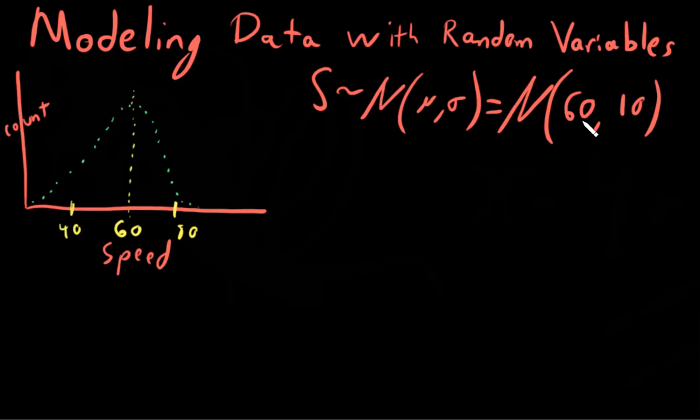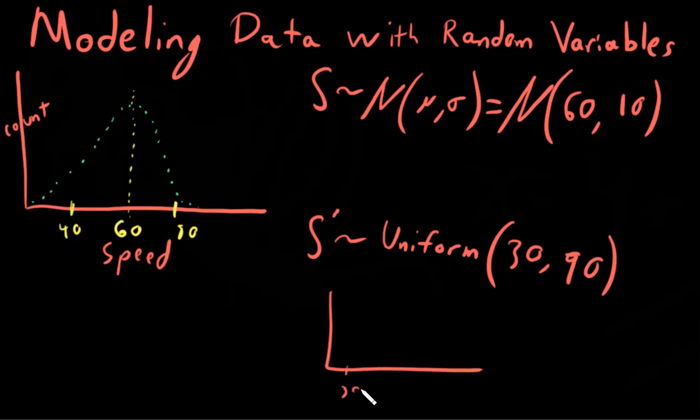Let's look at an alternative. We could, for example, choose to model this via a different random variable. Let's say we're going to model it with S prime as a different random variable. And instead of using the normal distribution, we're going to use the uniform distribution between the ranges of 30 and 90. And so if we were to plot what this distribution looks like, and if this is 30 and this is 90, what this distribution looks like is something like this. It's flat between the regions of 30 and 90 and zero everywhere else.